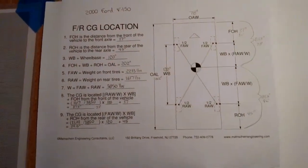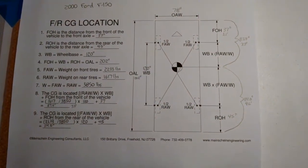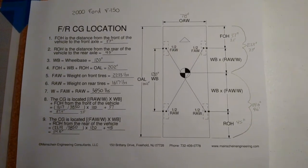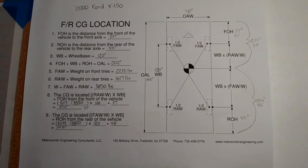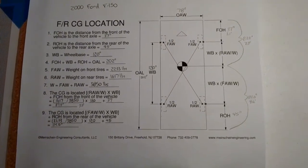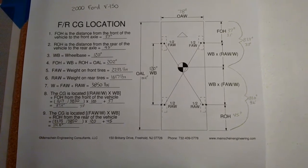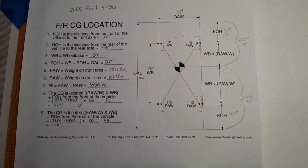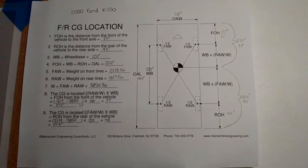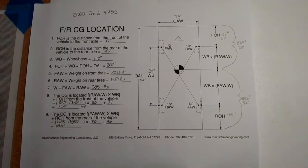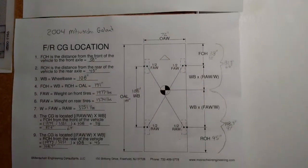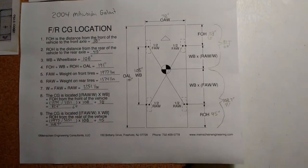Next I used the CG location template that's posted in our files section, filled in the blanks on that, and that allowed me to locate the center of gravity distance from the front of the vehicle or the rear of the vehicle, depending on which is less mangled, or maybe it won't make a difference on your test problem, but one of those sheets for each of the vehicles involved.